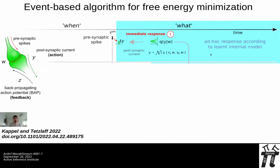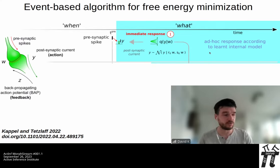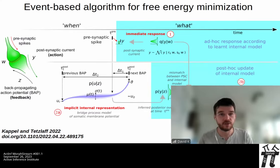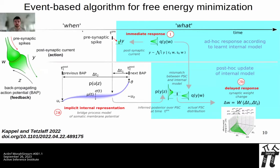This model can be split into two pathways: an ad hoc response — whenever there is a presynaptic spike, the synapse draws from a Gaussian distribution and injects it into the neuron — and a post hoc update, where the synapse looks up in the Ornstein-Uhlenbeck bridge what the optimal output should have been, compares the actual action with this optimal action according to the free energy principle, and generates a delayed response — an update of the synaptic weight.